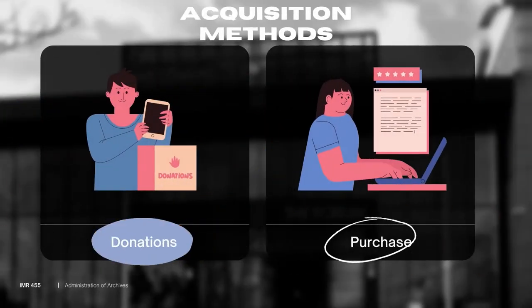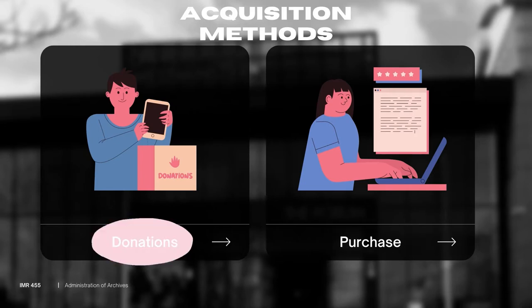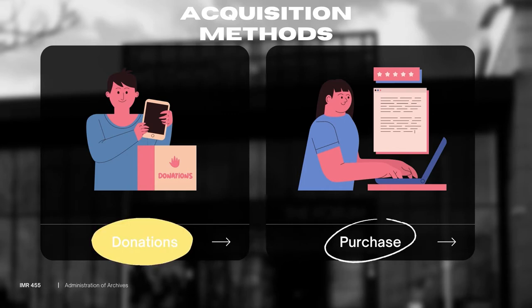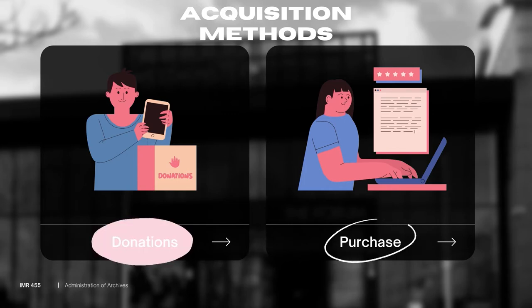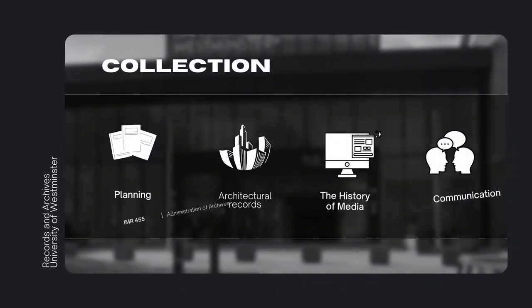The available acquisition methods are donations or purchase. The collections available in the archive include planning, architectural records, and the history of media and communication.